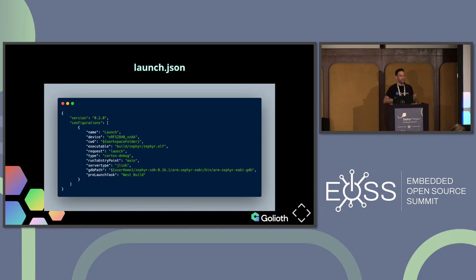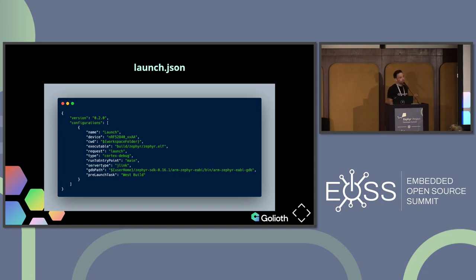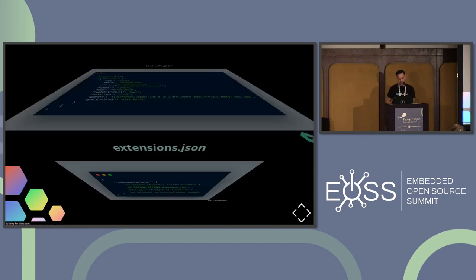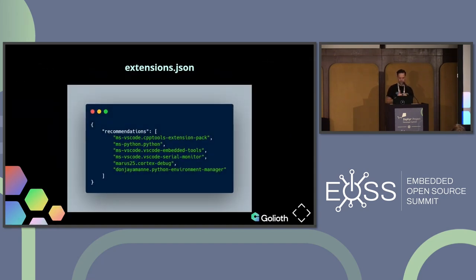Related to that is the debugger interface — for some reason called launch.json — where you launch a debugger instance and attach it. This is how you configure Cortex Debug to attach to a device and use the debugging interface. If you have multiple configurations, you can define those in your launch.json. There's also extensions.json, which functions as recommended extensions. If you're setting up a new environment or a colleague is, it will prompt you: 'This project is recommending these six extensions — do you want to install them all right now?' So it presets the extensions pretty nicely.